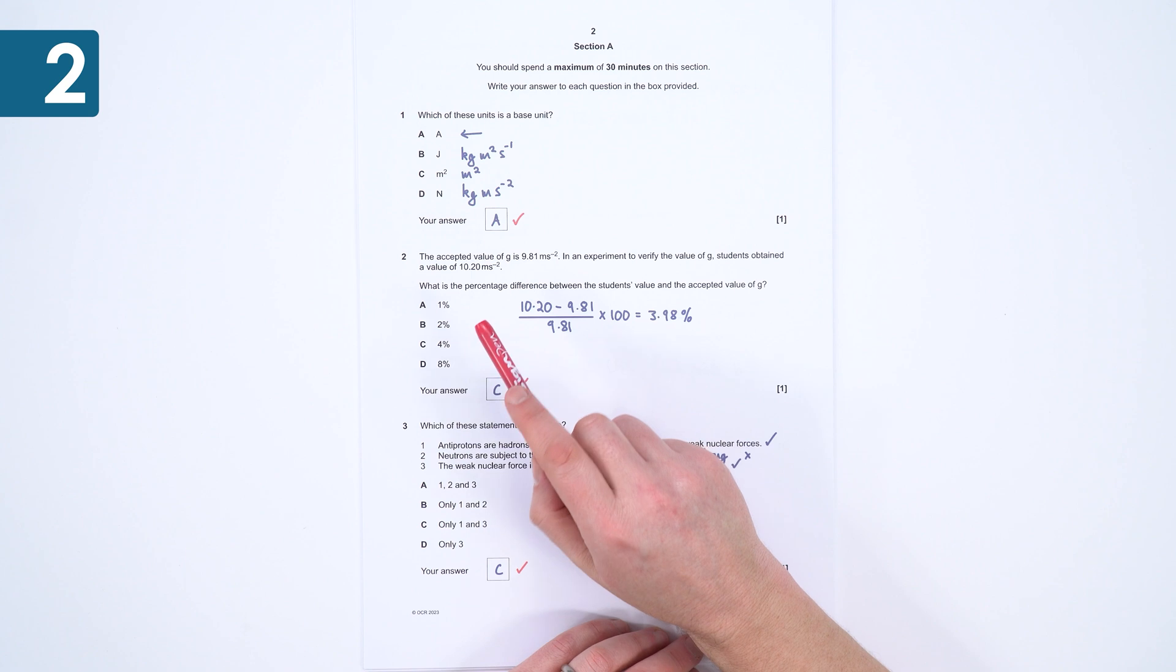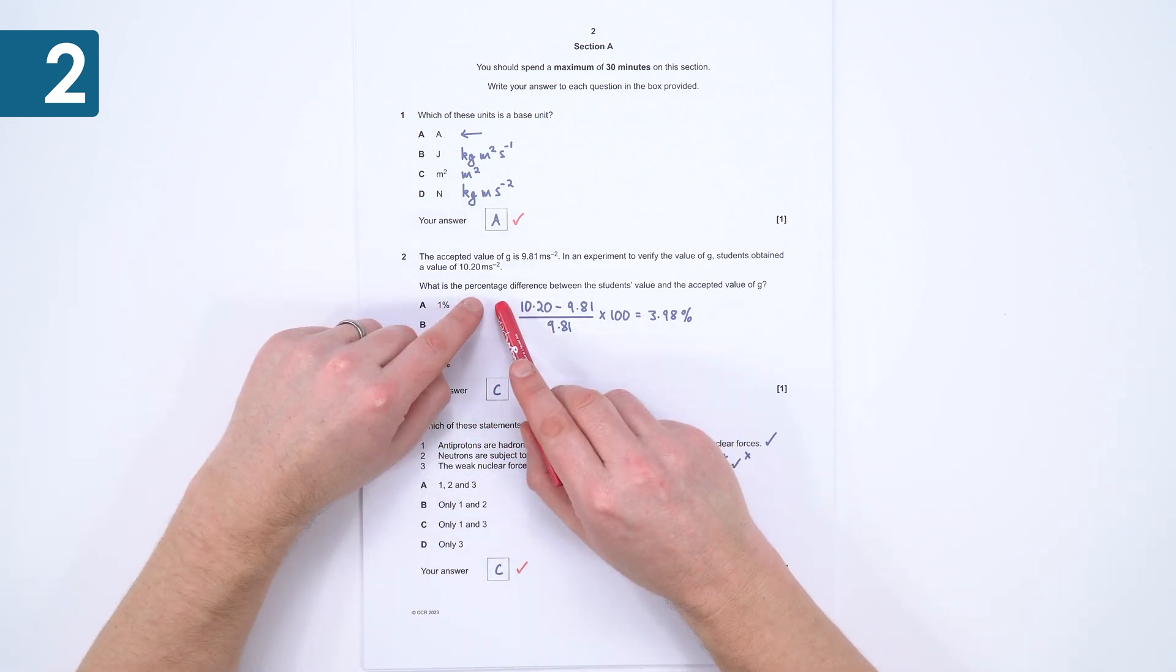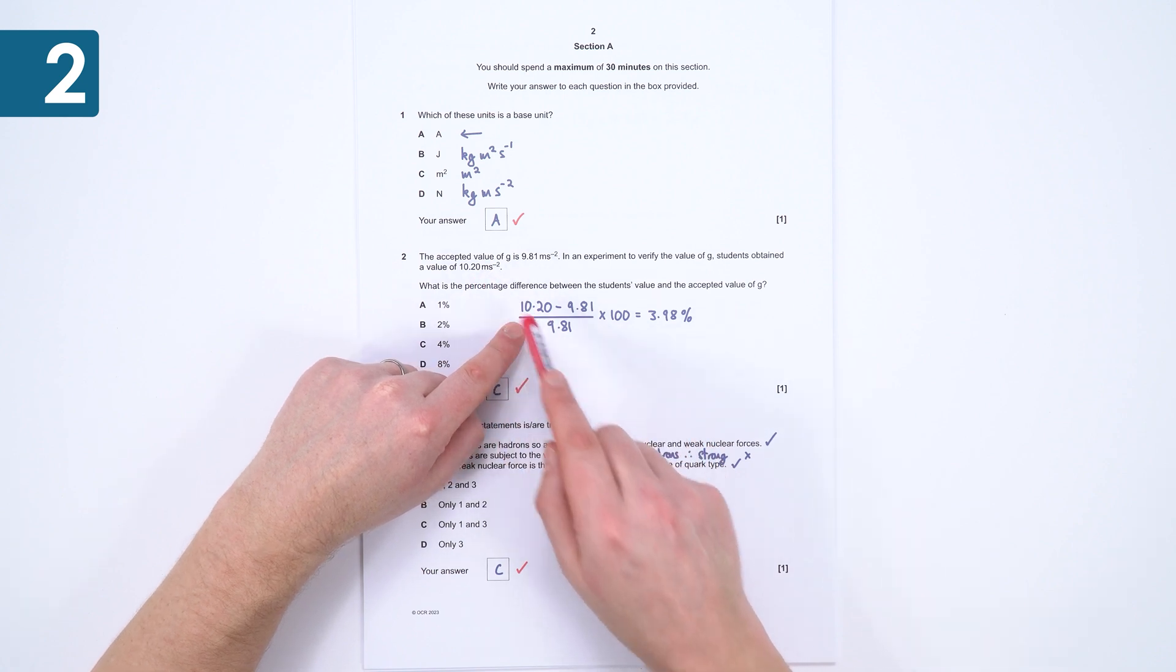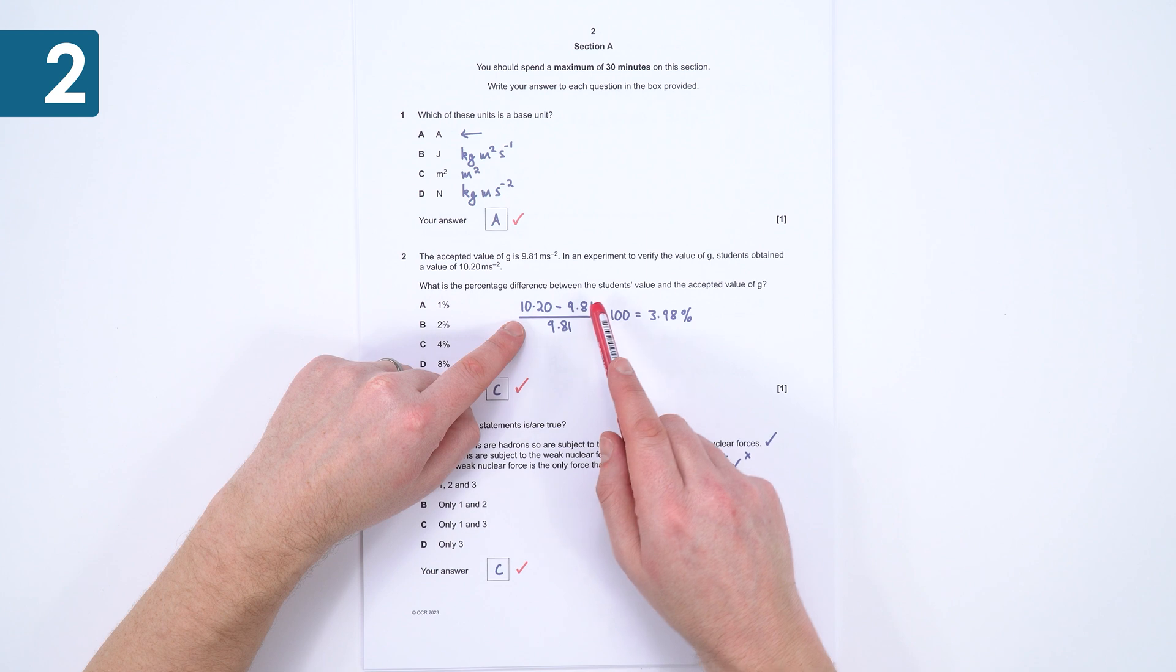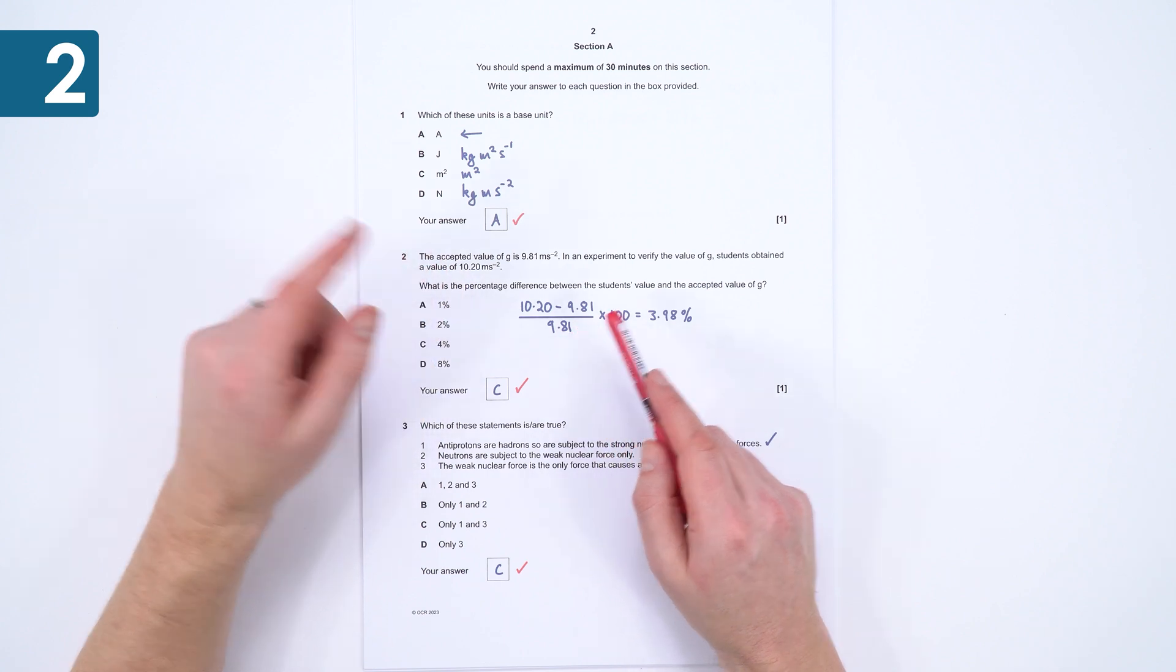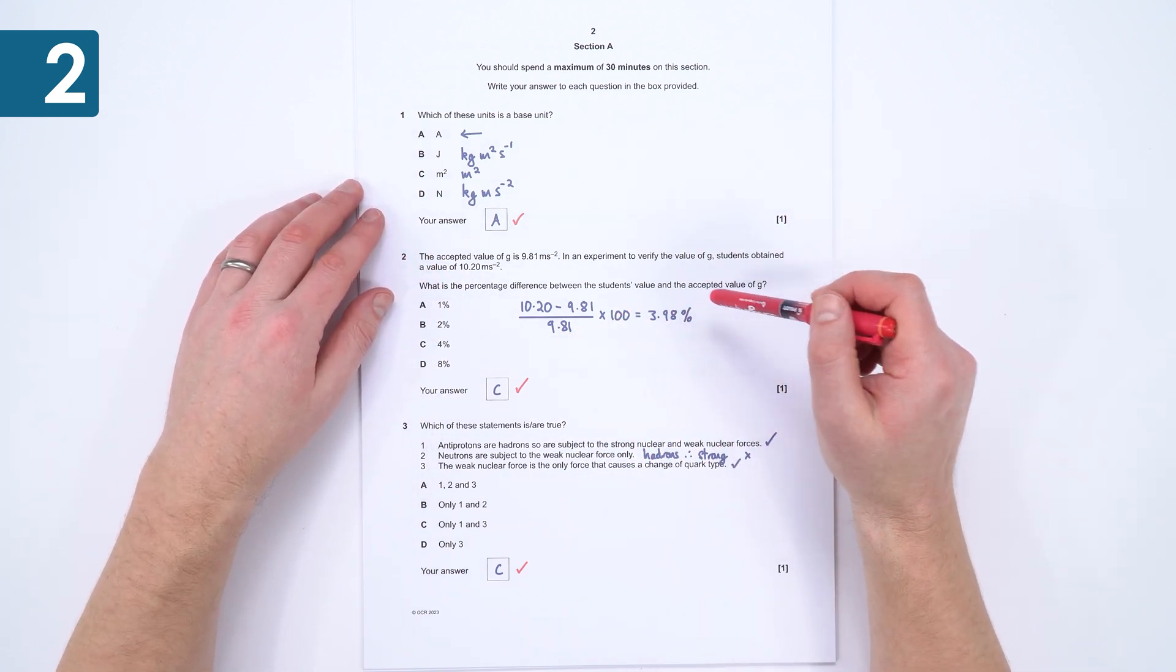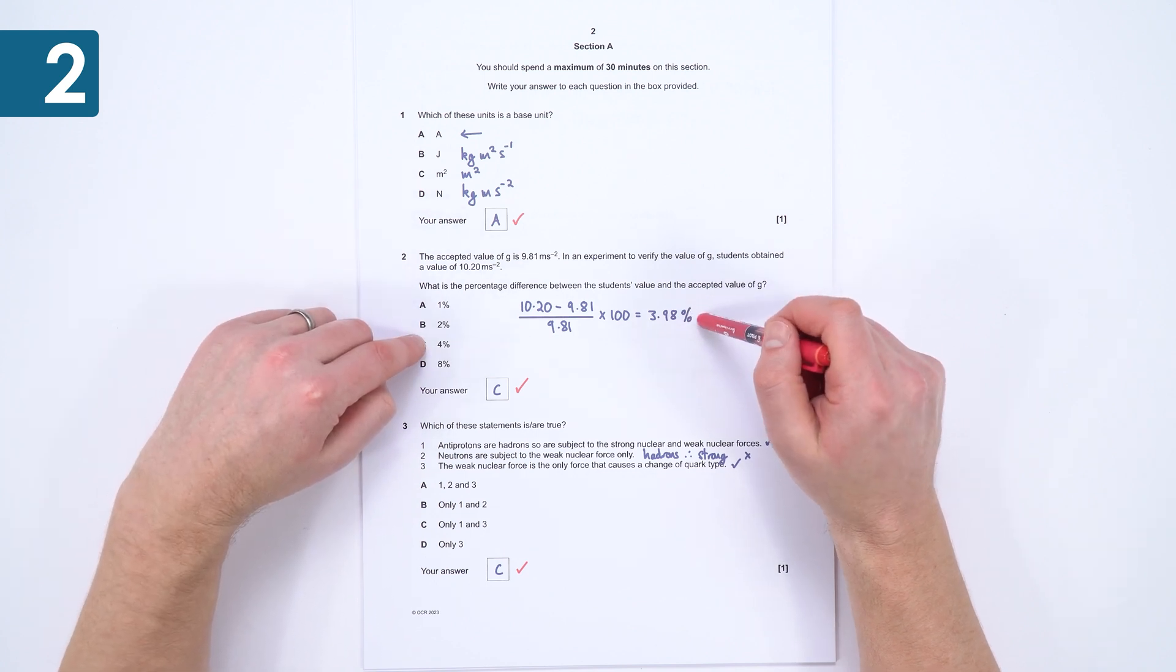The next one doesn't come up that often, it's about the percentage difference. The way you can work this out is you look at the difference between their experimental value, which was 10.20, and the accepted or the true value. So we just look at the difference between these two numbers and then we divided by the accepted or the true value, multiplied by 100, and this gave me an answer of 3.98. So the closest one of these was C, so about 4%.